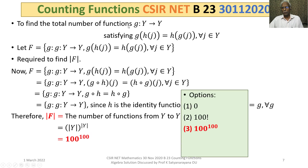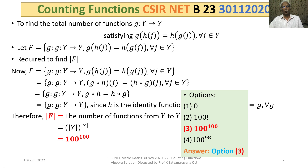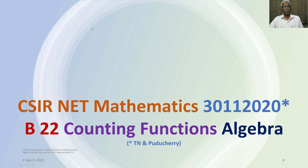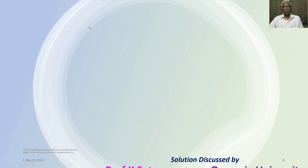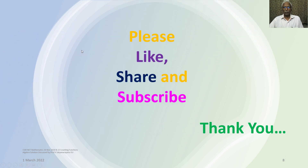Looking at the options, our answer 100 to the power 100 appears against Option 3. So our answer is Option 3. That is the proof and solution of the given problem. It is a problem on counting of functions from the section Algebra. I hope you have understood the proof, and I encourage you to work out some more problems on counting. I wish you all the best. Thank you.